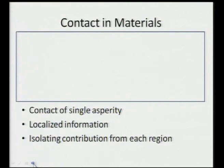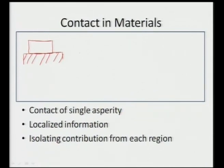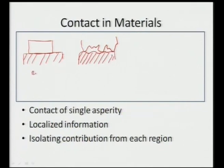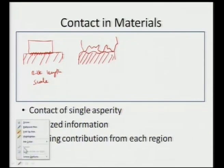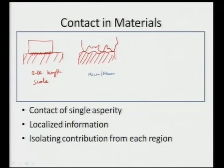When we observe contact in materials at bulk scale, the contact appears complete — one surface touching another nicely for a flat surface. But if we zoom in to very high magnification, we realize that surfaces are not optically smooth; they have perturbations at micron or nano length scales. So the actual contact can be very different from what is defined at bulk scale. At bulk scale we see complete contact, whereas at micro or nano scale the overall contact area is drastically reduced.